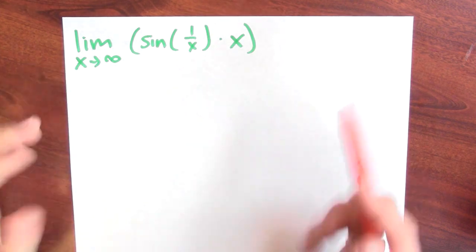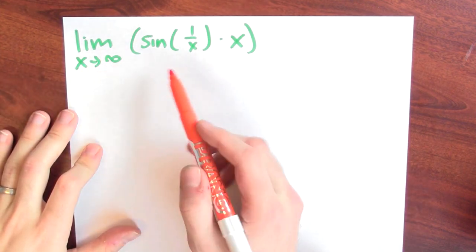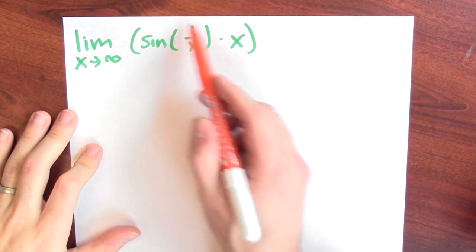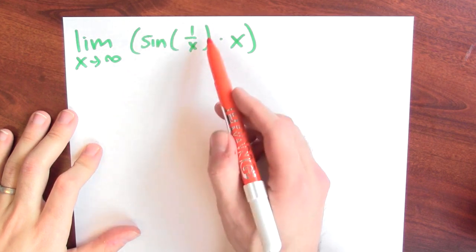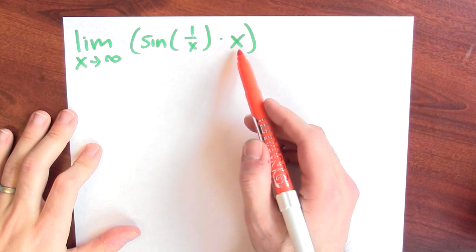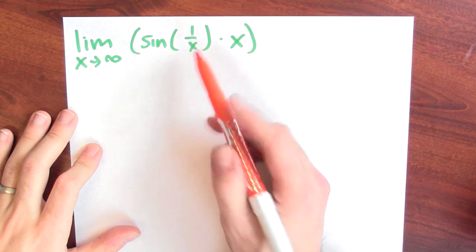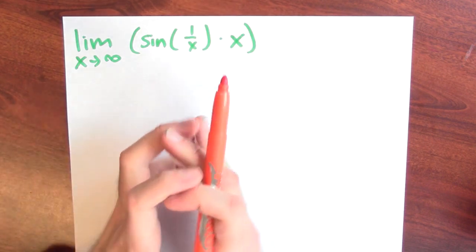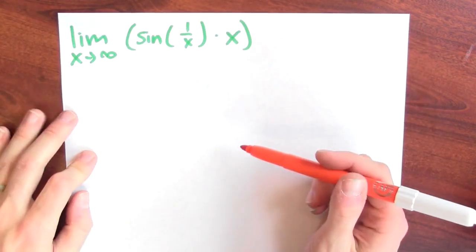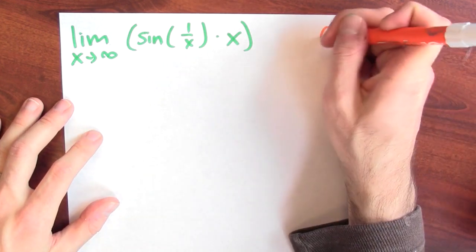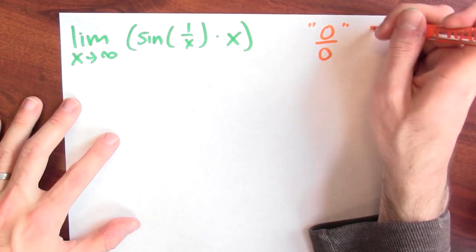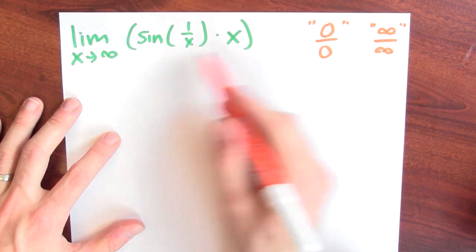But not every limit is 0 over 0 or infinity over infinity. Sometimes you might have a limit where it's a product — the first term is heading towards 0 and the second term is heading towards infinity. For example, here I'm asking about the limit as x approaches infinity of sine of (1/x) times x. The first term, sine of (1/x), gets close to 0 when x is very large, and the second term, just the x, gets very big. This first term tends to make the quantity smaller, but the second term tends to make it bigger — who wins? L'Hôpital can only deal with a 0 over 0 or infinity over infinity situation, and this is neither.